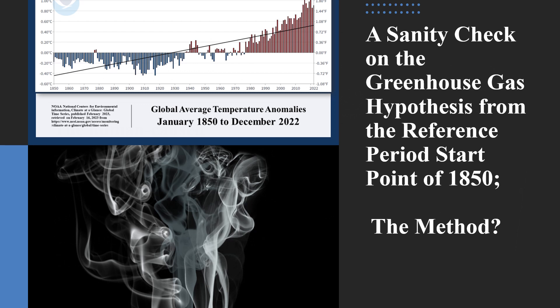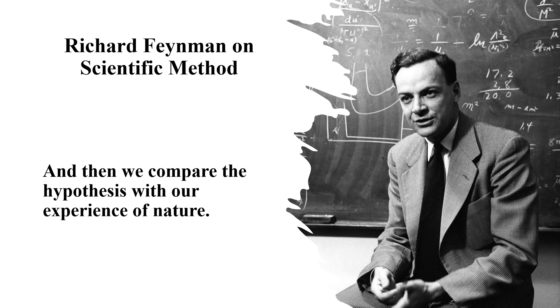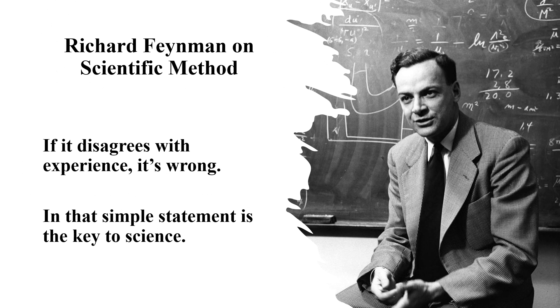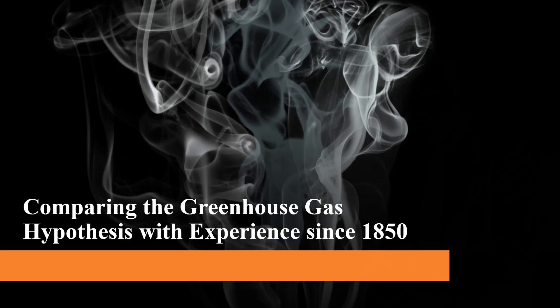We will use a rigorous but straightforward method to carry out the sanity check on this hypothesis. We simply follow the advice of Nobel laureate Richard Feynman. In general, he says, we look for a new law by the following process: first, we guess or hypothesise it, and then we compare the hypothesis with our experience of nature. If it disagrees with experience, it's wrong. In that simple statement is the key to science. We now compare the greenhouse gas hypothesis with experience using the extended NOAA data, starting from 1850.